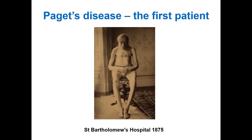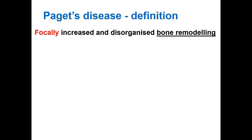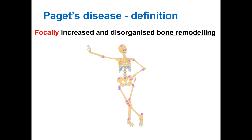This is a photograph of the first patient of Sir James Paget. You can appreciate the significant bowing deformities of his shin bones and also of his thigh bones. However, nowadays we know that Paget's disease is not due to bone inflammation, but it is due to focally increased and disorganized bone remodeling. In Paget's disease this remodeling gets out of control and can progress down the shin bone causing bone swelling and deformity.